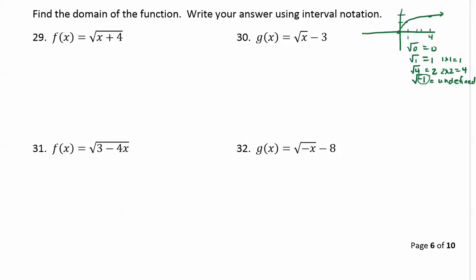When we have a square root, the inside expression must be positive, so we always set the inside expression of a square root greater than or equal to 0, because on a number line that is the positive direction.